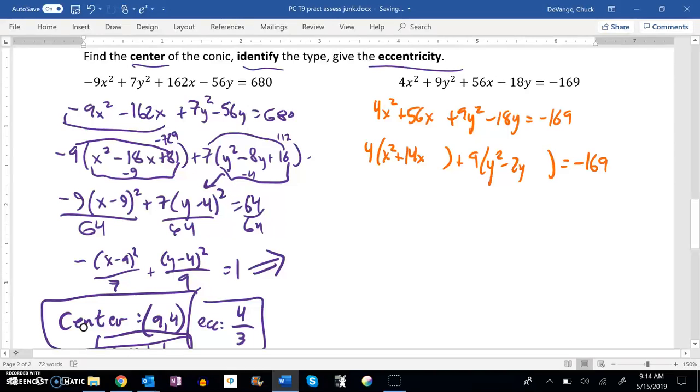Now, I'll do my square completing. Half of 14 is 7. 7 squared is 49. But this 49 is multiplied by a 4, so it's actually worth 196.